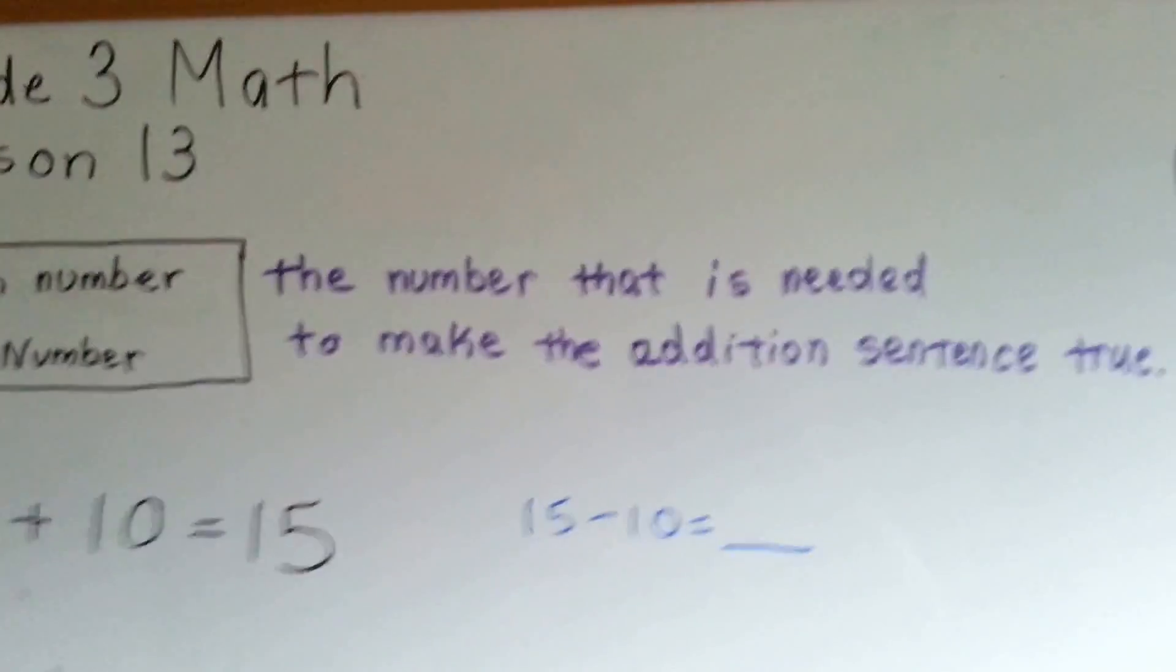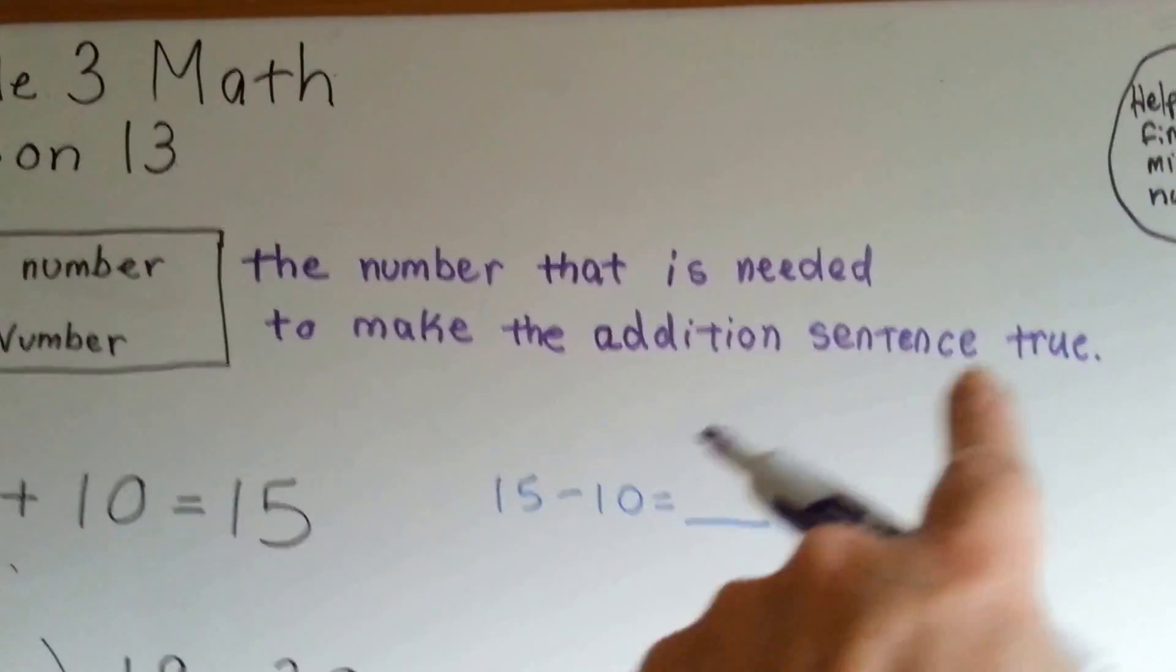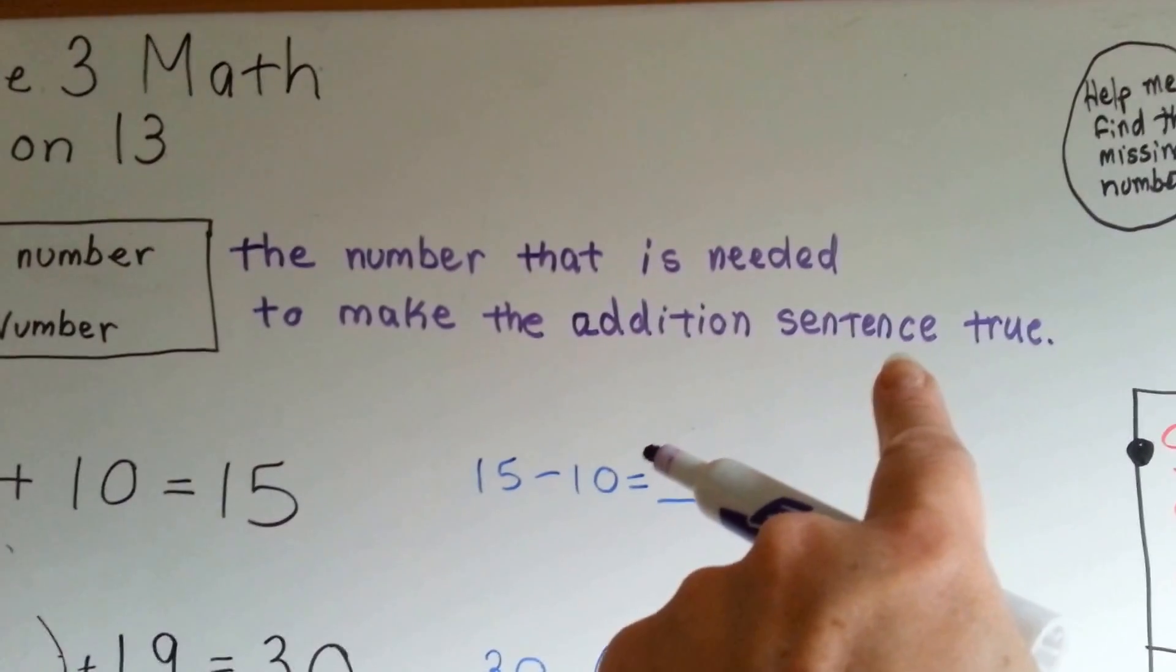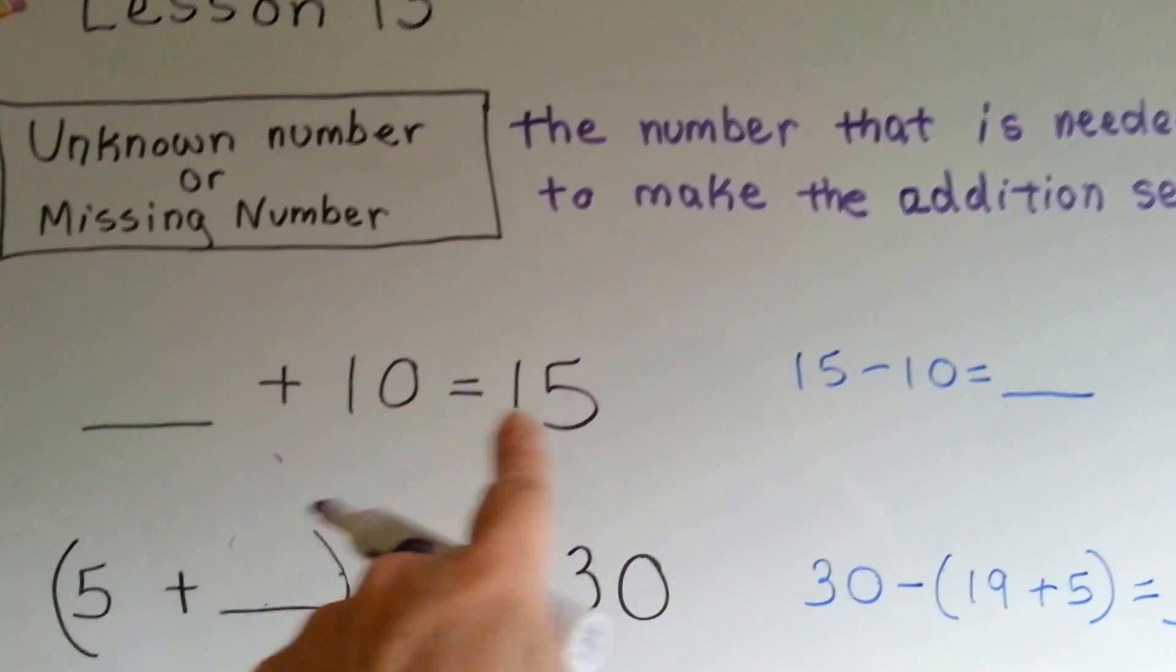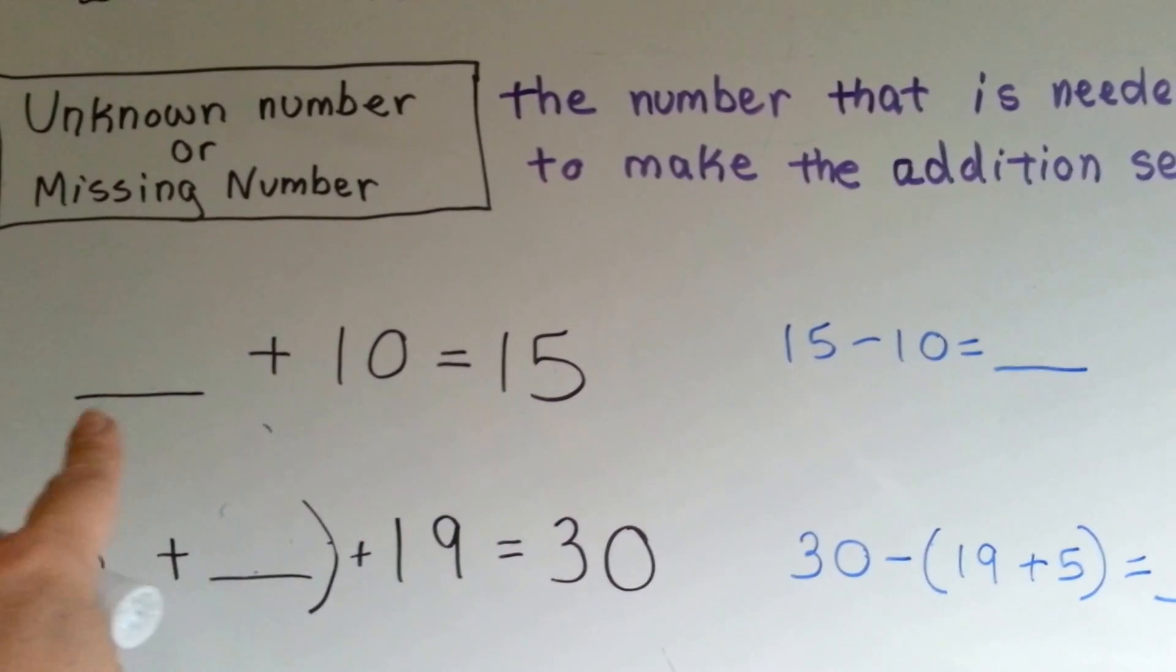An unknown number or missing number is a number that is needed to make the addition sentence true. We want to make this sentence correct or true.